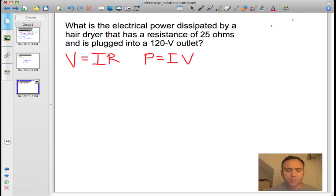This is actually a two-step problem. Let's look at what we have first. So the first thing they give us here is the resistance. They give us the resistance, and we're told that the resistance is equal to 25 Ohms. And the second thing they give us is the voltage, which is 120 volts. So if you plug this hairdryer in, it has a resistance of 25 Ohms, and we're using 120 volts.